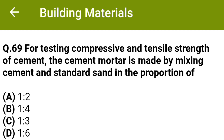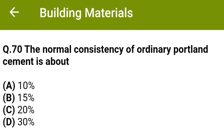For testing compressive and tensile strength of cement, the cement mortar is made by mixing cement and standard sand in the proportion of: option A 1:2, option B 1:4, option C 1:3, option D 1:6. The correct answer is option C: 1:3. Consistency of ordinary Portland cement is about: option A 10%, option B 15%, option C 20%, option D 30%. The correct answer is option D: 30%. Thank you.